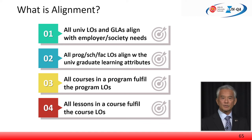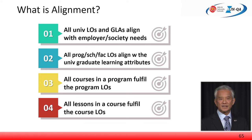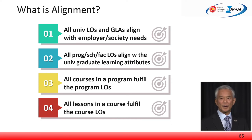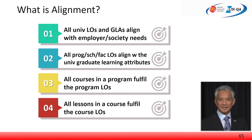The learning outcomes of the program, school, or faculty need to be aligned with the higher-level university learning outcome. Then the learning outcome of all courses in the program must be aligned with the higher-level program learning outcome. At the lowest level, every lesson in a course must have its learning outcome aligned to that of the course.